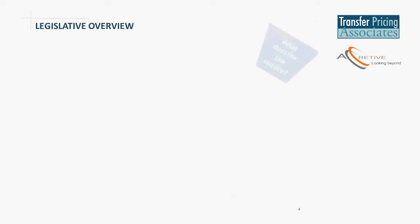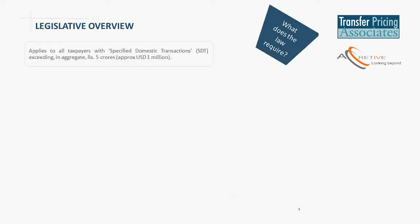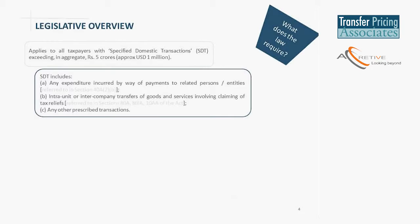The law says that all taxpayers with specified domestic transactions would need to compute its transaction value having regard to the arm's length principle. The kind of transactions which are covered include any expenditure incurred by way of payments to related entities. In case of entities which are enjoying tax incentives in India, either under the special economic zone or because they have undertakings or units in special regions, if there have been any intra-unit or intra-company transfer of goods affecting those units, those will need to be computed having regard to the arm's length principle and any other prescribed transactions. So far, no other specific transaction has been prescribed.